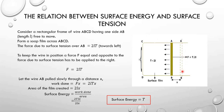The total area of the film created is L into x, but since there are 2 surfaces, the total new area is 2Lx. So surface energy equals work done divided by total area, which is 2LTx divided by 2Lx, giving surface energy equal to T. That is the relation between surface energy and surface tension.